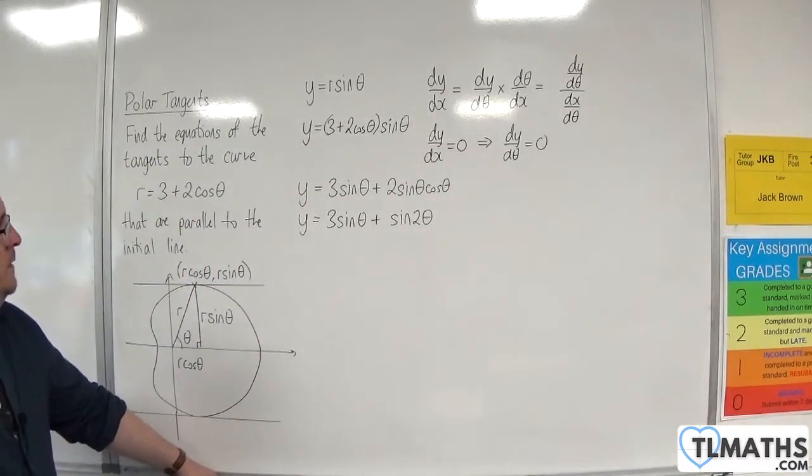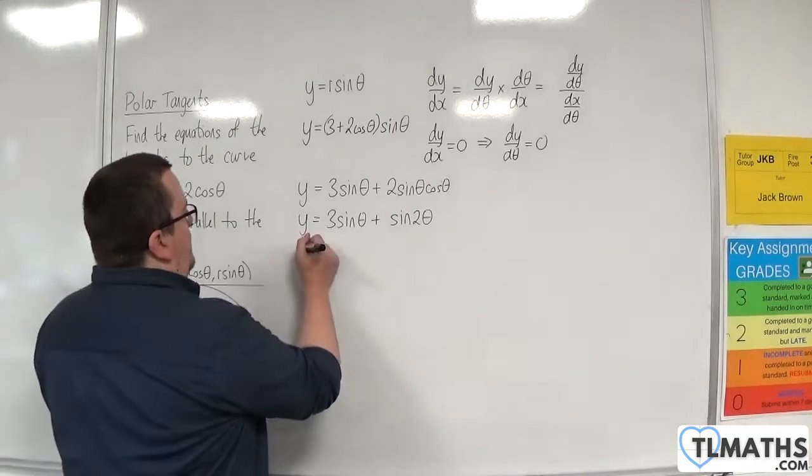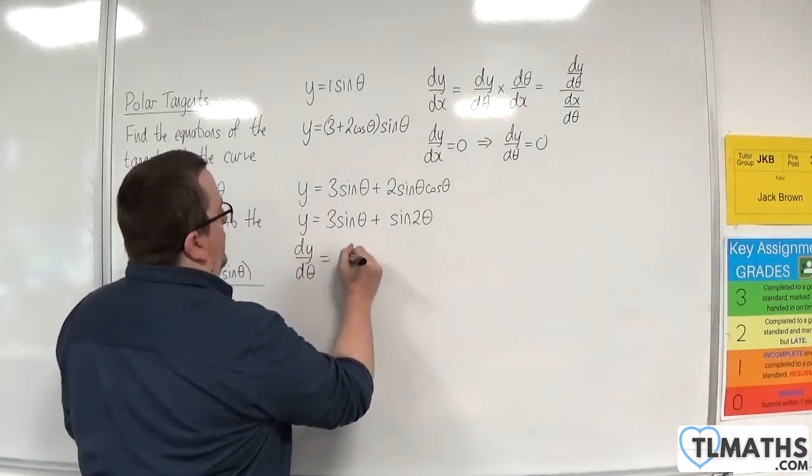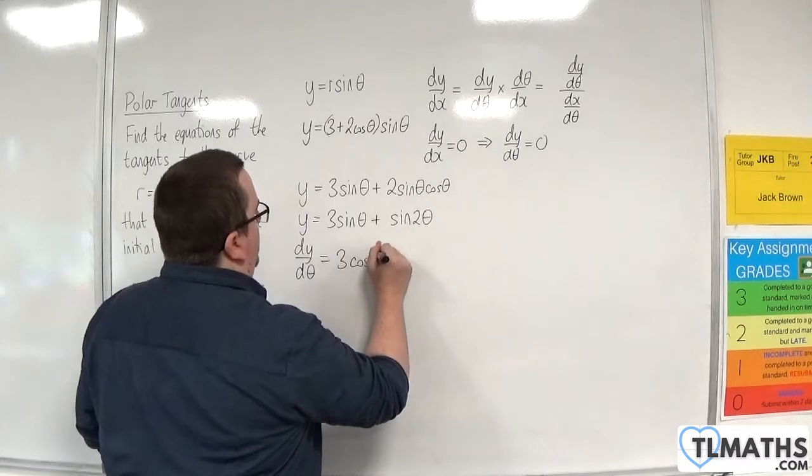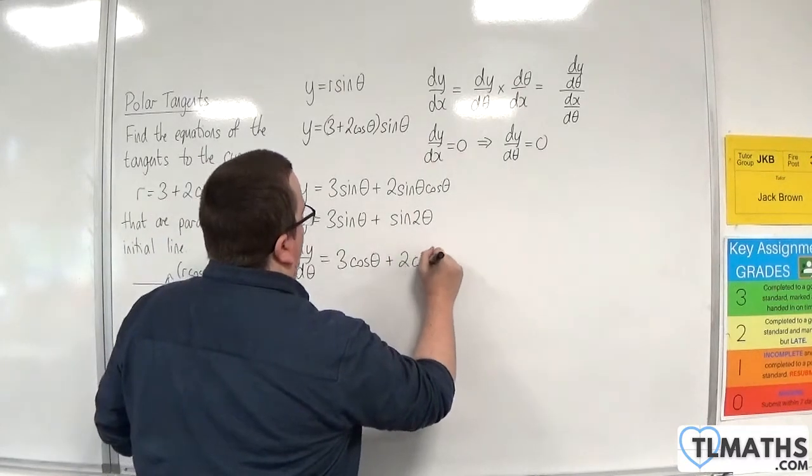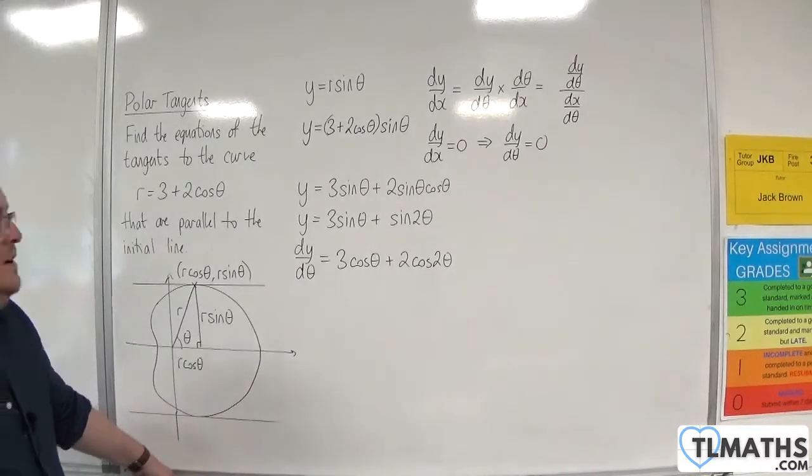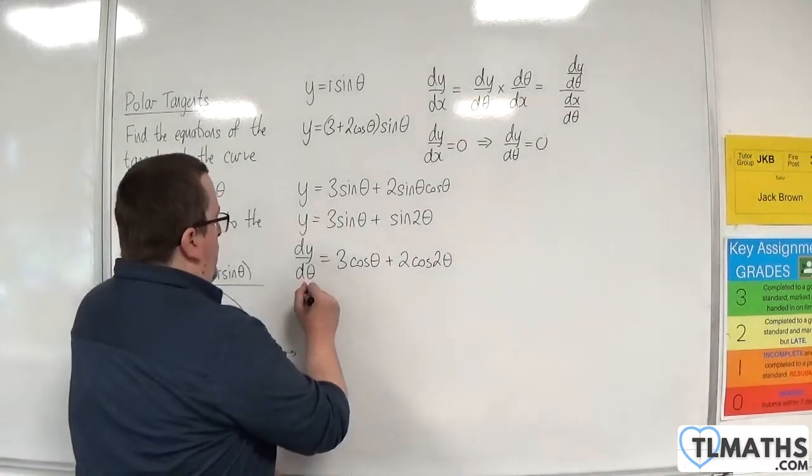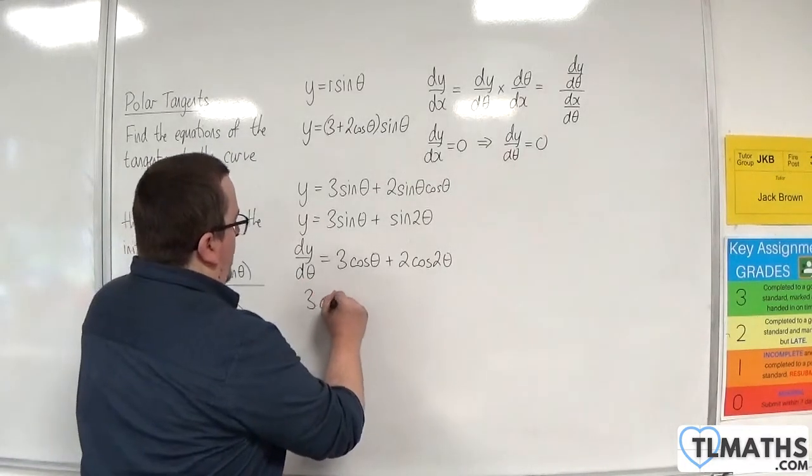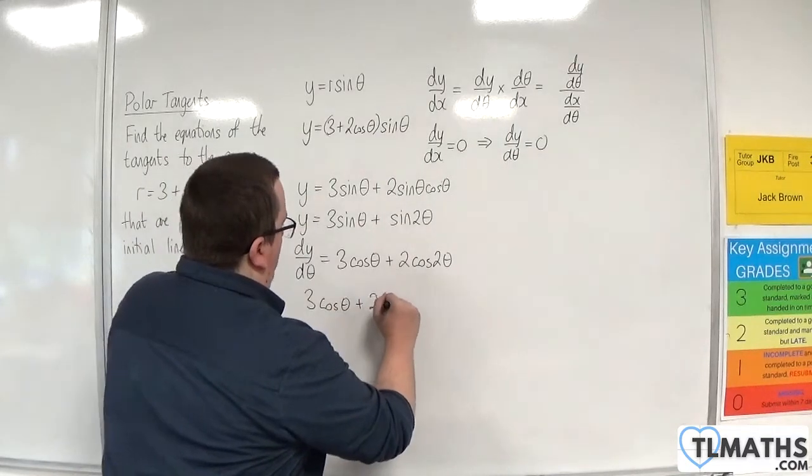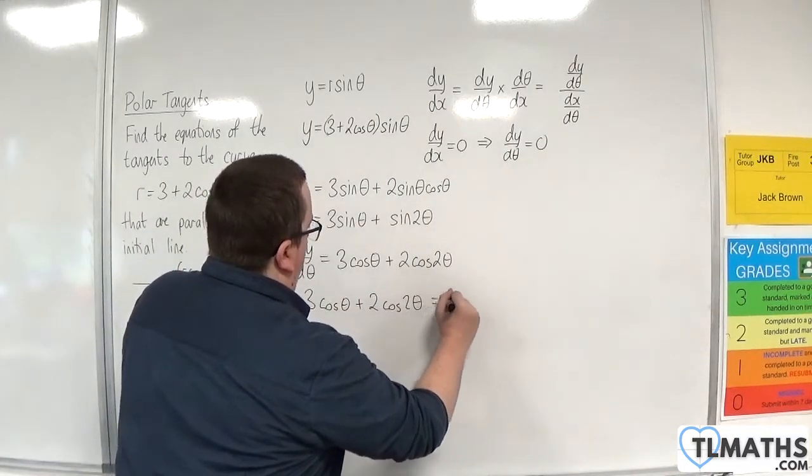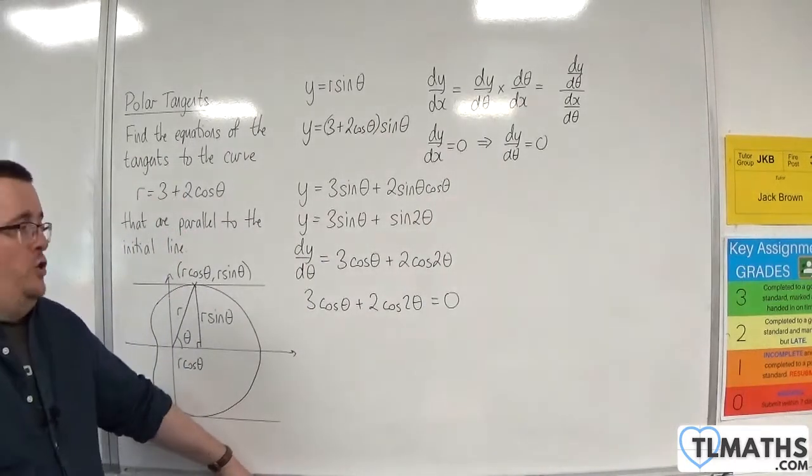Okay, so I need dy by d theta. So, dy by d theta would be equal to 3 cosine theta plus 2 cosine 2 theta. And I now need to put that equal to 0. So, 3 cosine theta plus 2 cosine 2 theta is 0. I need to solve that equation.